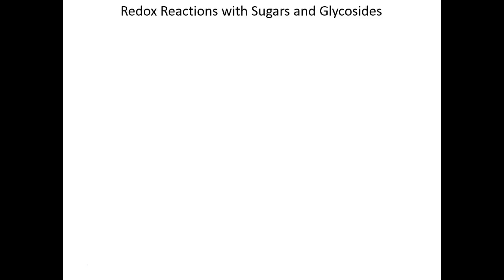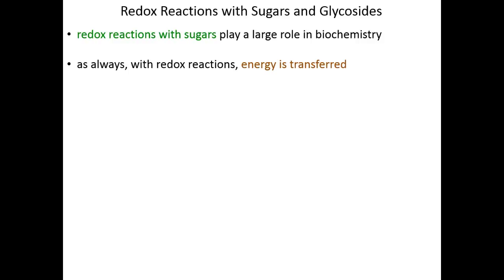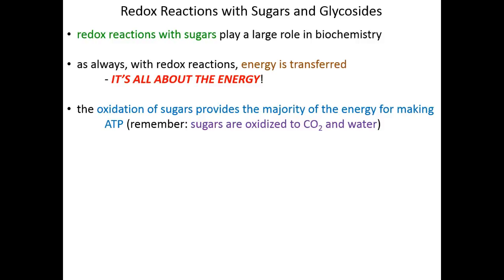Let's jump right in and talk about some chemistry that involves sugars — and what better chemistry to talk about first than redox reactions, because we're so comfortable with them already. Redox reactions with sugars are probably one of the most important things that can happen in biochemistry; it's certainly what we're going to spend much of this semester on. As always, redox reactions are nothing more than the transfer of electrons, but since where electrons go energy is being carried, we use redox reactions to transfer energy. These redox reactions will always be about the energy.